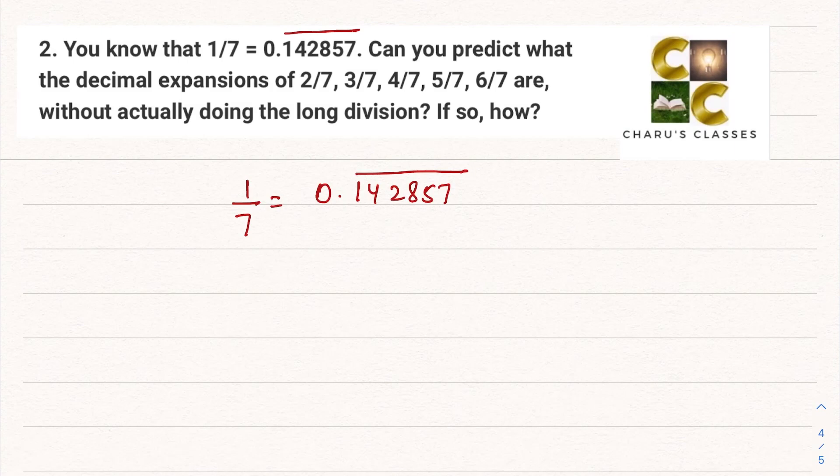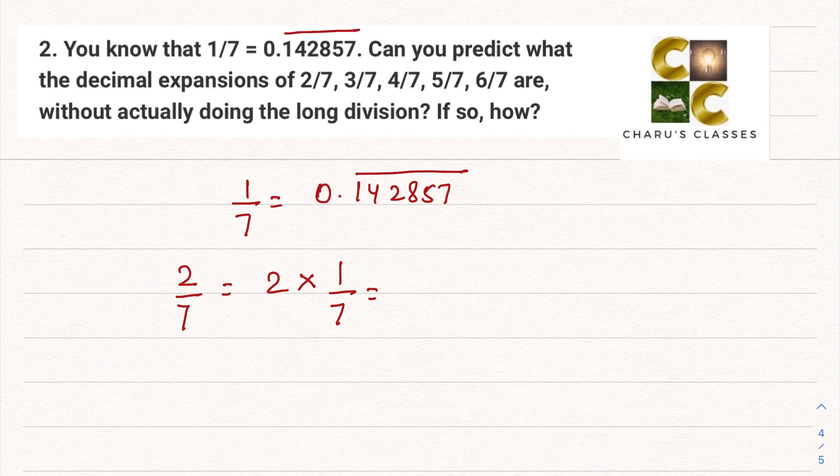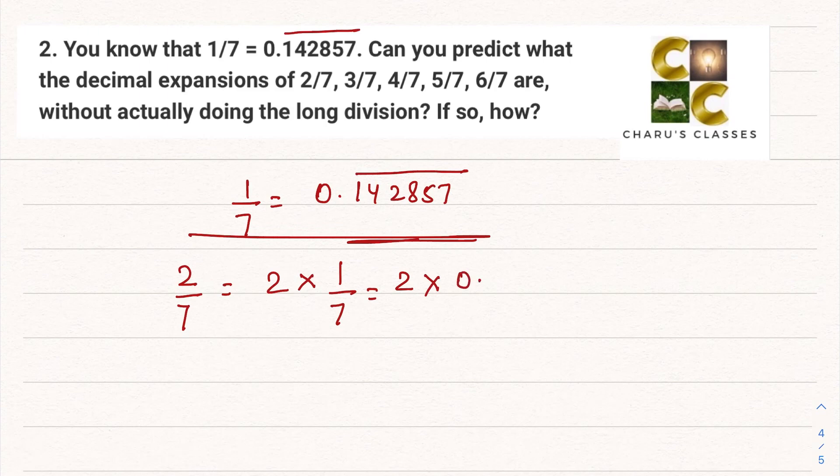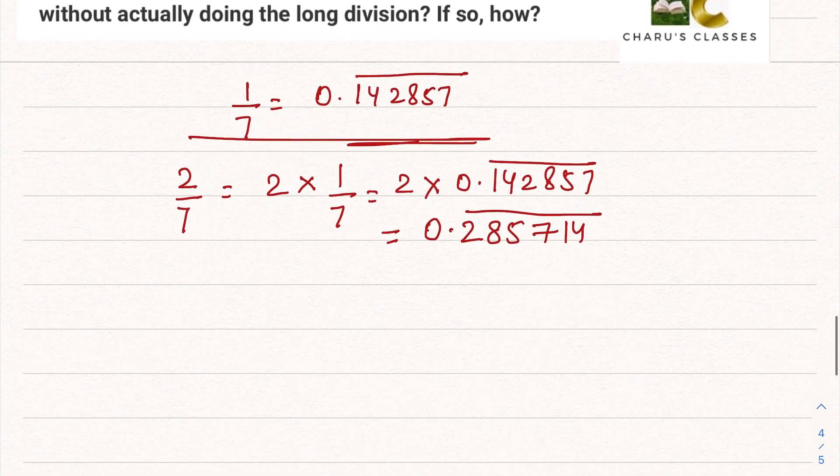Here 1 by 7 is given as 0.142857 bar. We are asked to find the value of 2 by 7 without actually dividing. So 2 by 7 can be written as 2 times 1 by 7. The value of 1 by 7 is given here, so I will put it as 2 times 0.142857 bar. In this case, if you multiply it, you are going to get 0.285714 bar. So this is the value of 2 by 7.